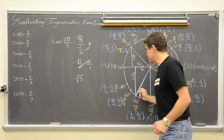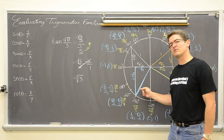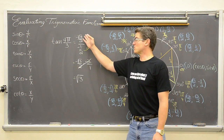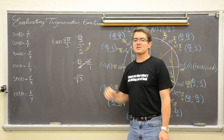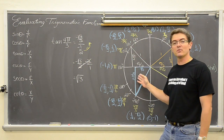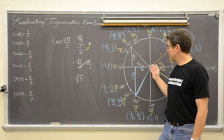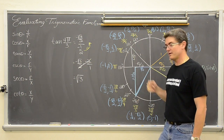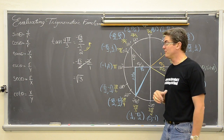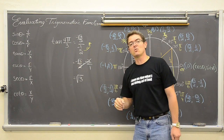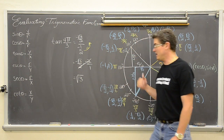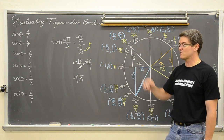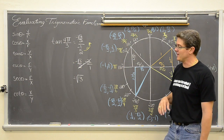That angle is in quadrant 3. Tangent is y over x, and in quadrant 3 both your x-coordinate and y-coordinate are going to be negative, and thus your tangent in quadrant 3 is going to be positive. So make sure you get that positive answer.